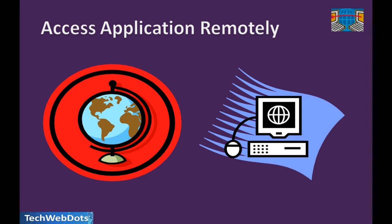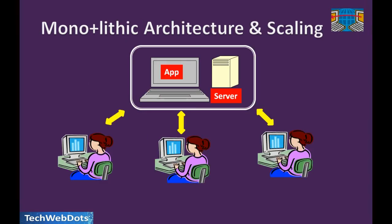End users don't care how many servers are working behind the scenes. They just want to send a request and receive a response — the HTML displayed in the browser. This setup, where every layer — customer service, vendor service, product service — all belong to a single combined application on one server, is called monolithic architecture. 'Mono' means single, so it's a single-store architecture.